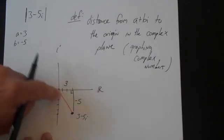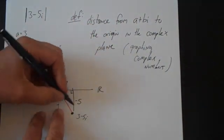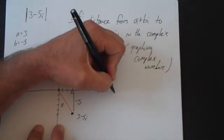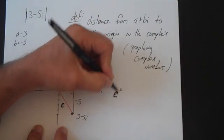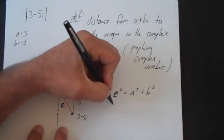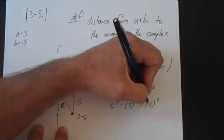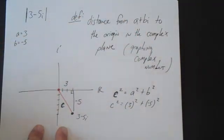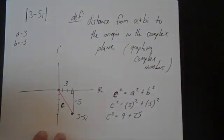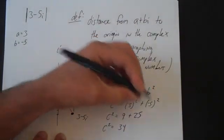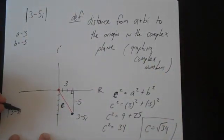You simply have a squared plus b squared equals c squared. So c squared is equal to a squared plus b squared, which gives us c squared equal to 3 squared plus 5 squared. Since we're squaring, it doesn't matter whether it's minus 5 or positive 5. So c squared equals 9 plus 25, which is 34, and c equals the square root of 34. The absolute value of 3 minus 5i is simply the square root of 34.